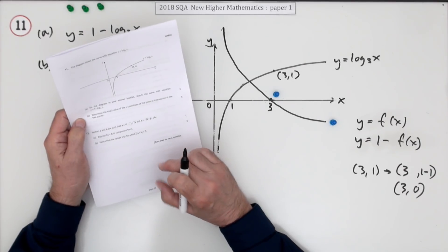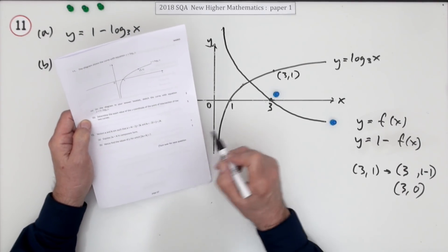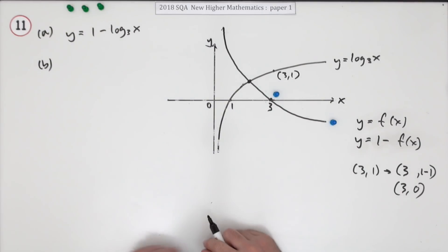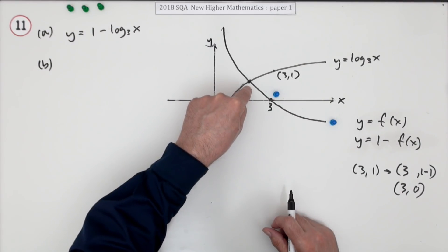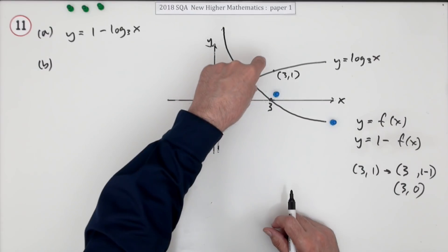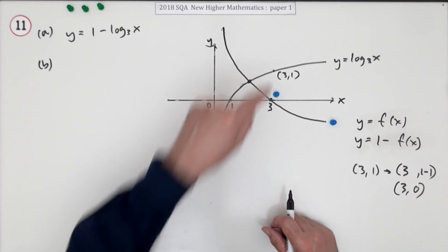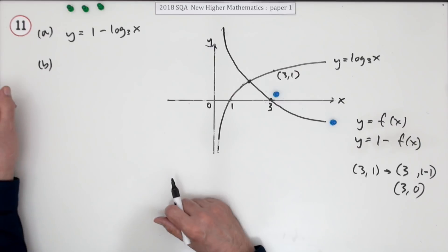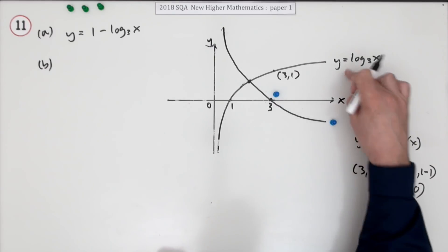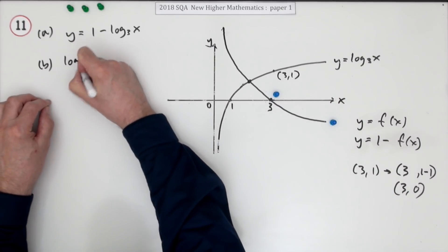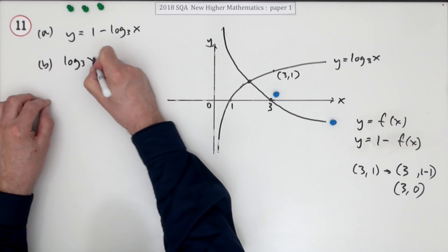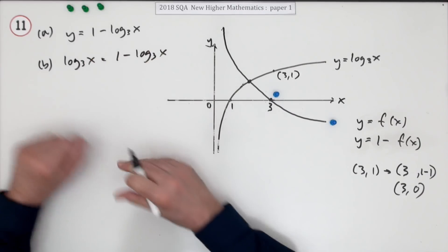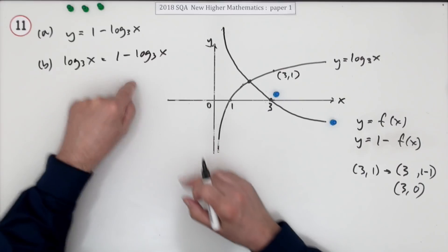Part B: determine the exact value of the x-coordinate of the point of intersection. It's a point of intersection, so substitute the two equations — the two equations must give the same y-coordinate. So log base 3 of x should equal 1 minus log base 3 of x, and just writing that equation gets a mark.